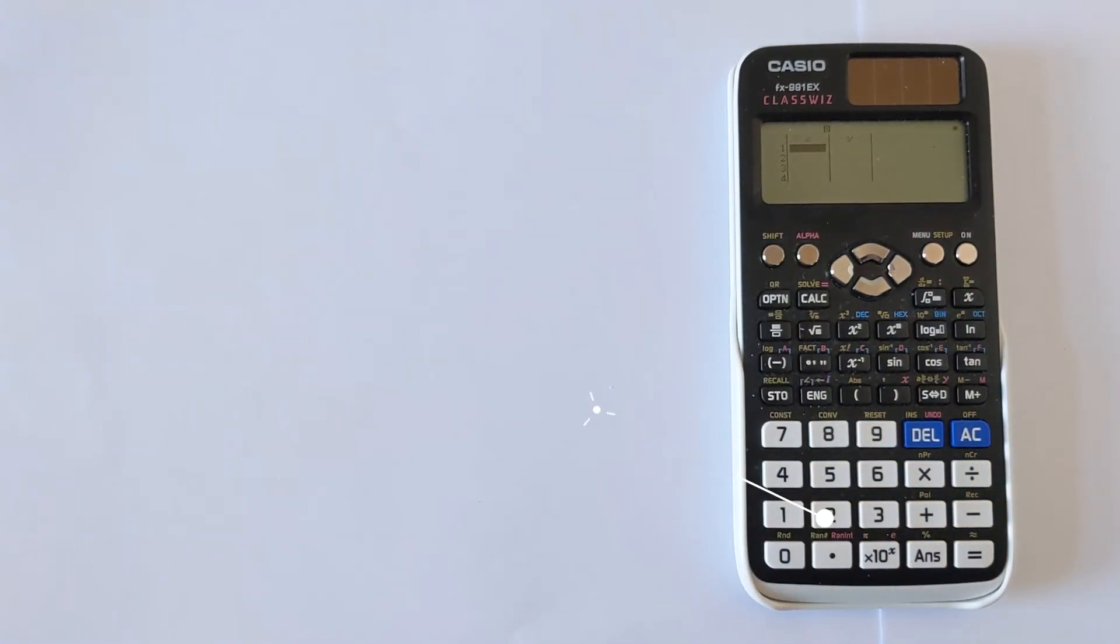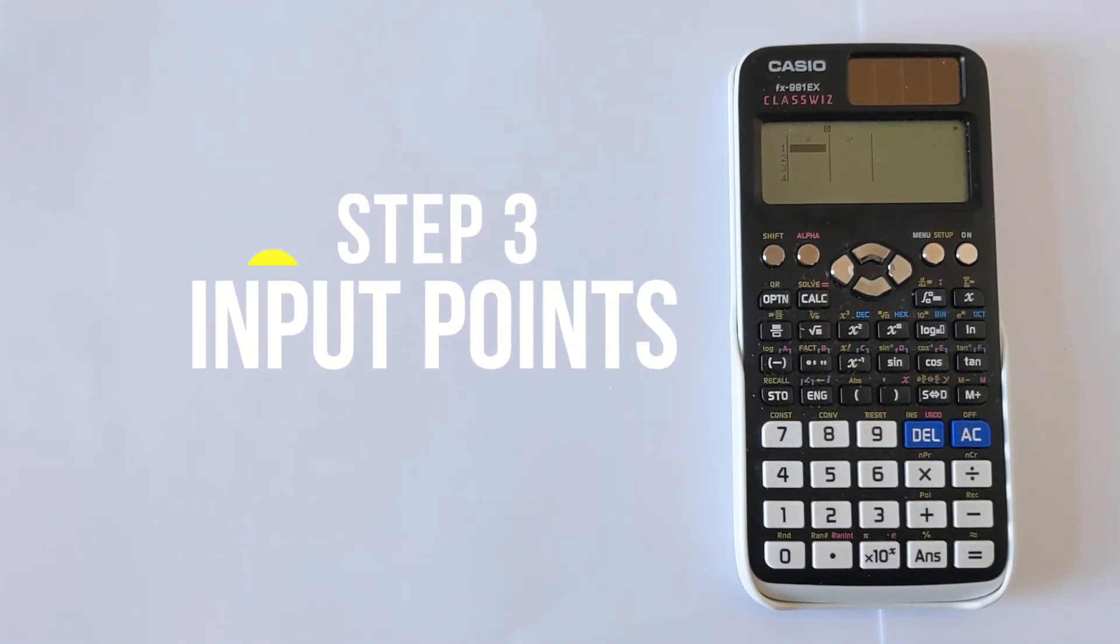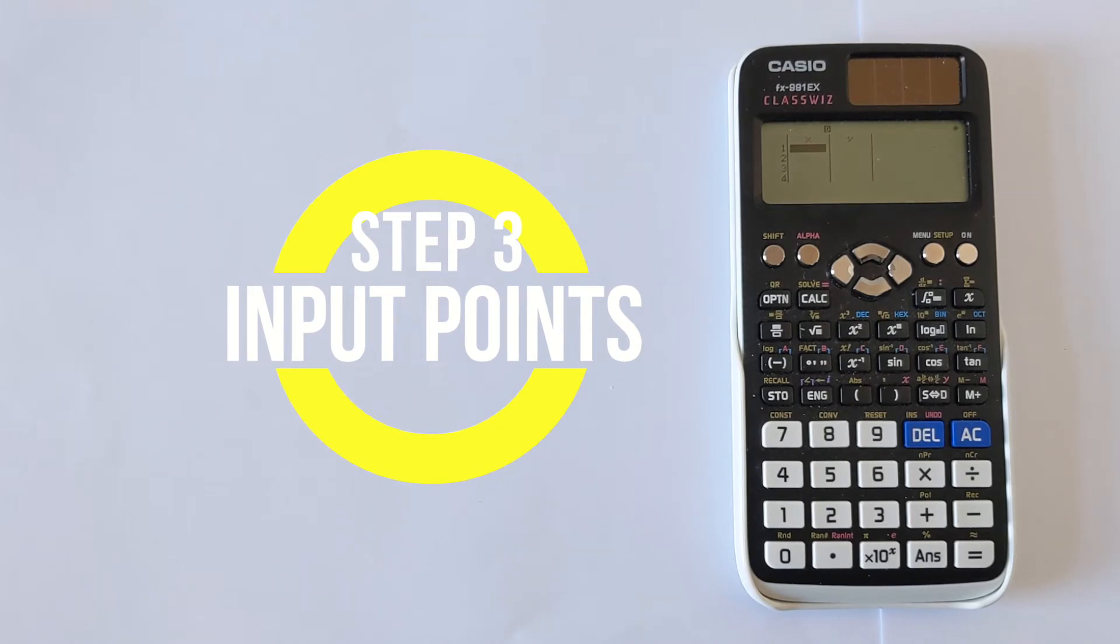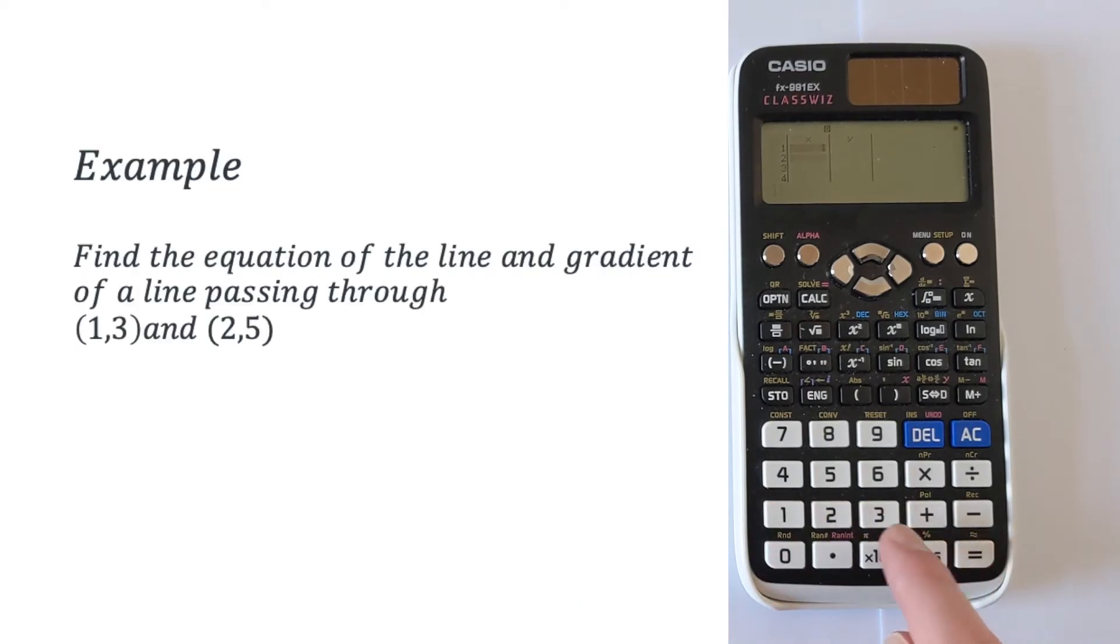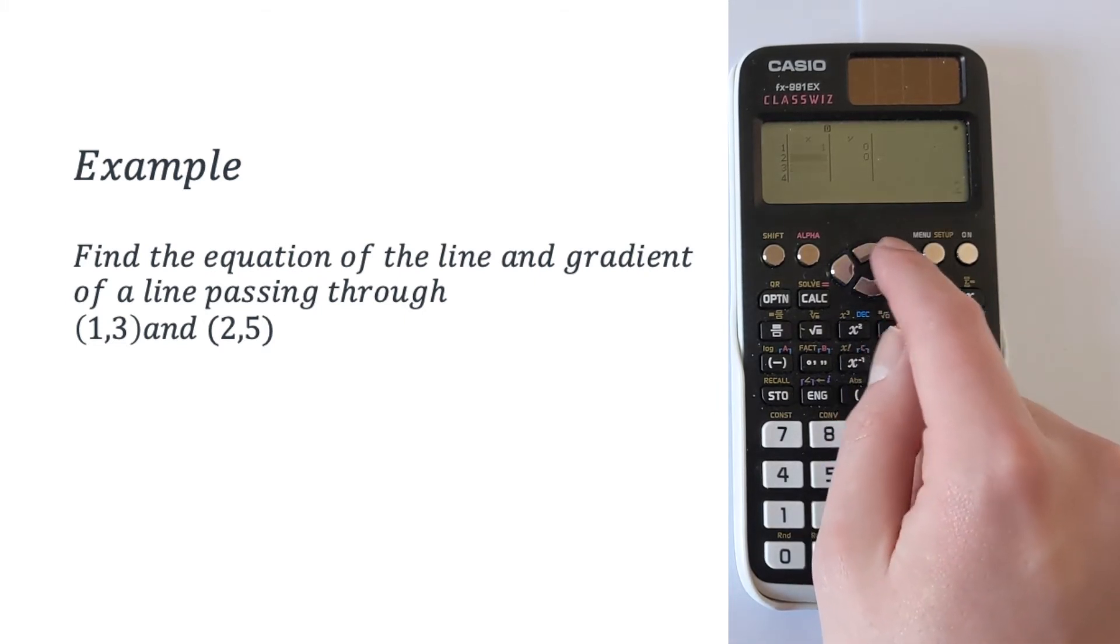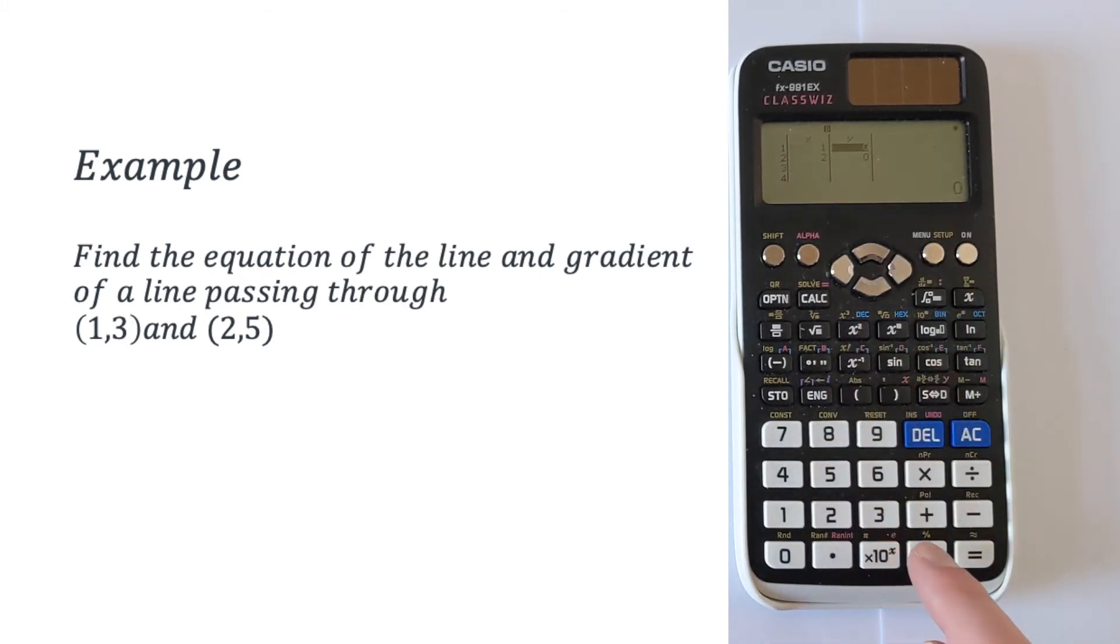We're now in this mode here, and it lets you put in the data. And so I'm going to start by putting in the x value. So we've got 1, and then we've got 2 for the x. It automatically fills in the y as 0, but we're going to override that. And the y values are 3, so we've got the point 1 and 3, and then the point 2 and 5. So we've now inputted all of our statistics data.